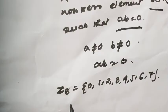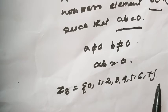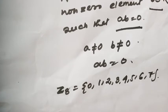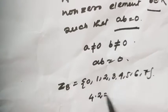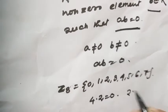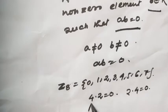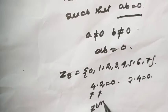For example, consider the cyclic group Z8, which contains {0, 1, 2, 3, 4, 5, 6, 7}, the integers modulo 8. Here, 4×2 = 8 ≡ 0 and 2×4 ≡ 0, so both 4 and 2 are zero divisors.